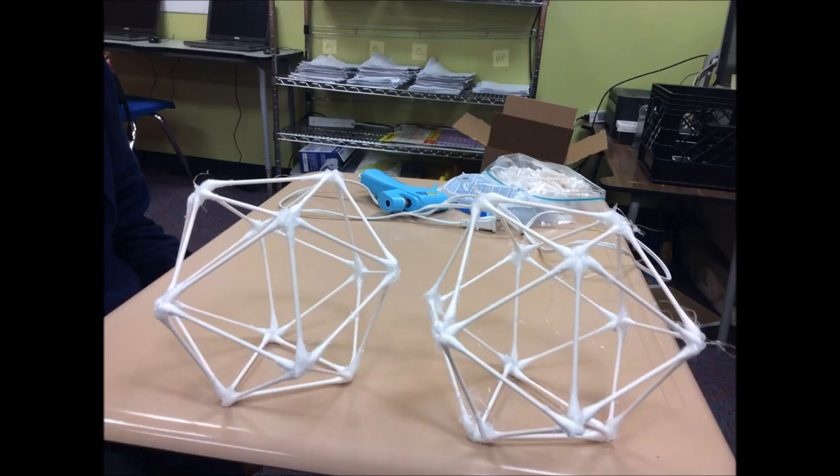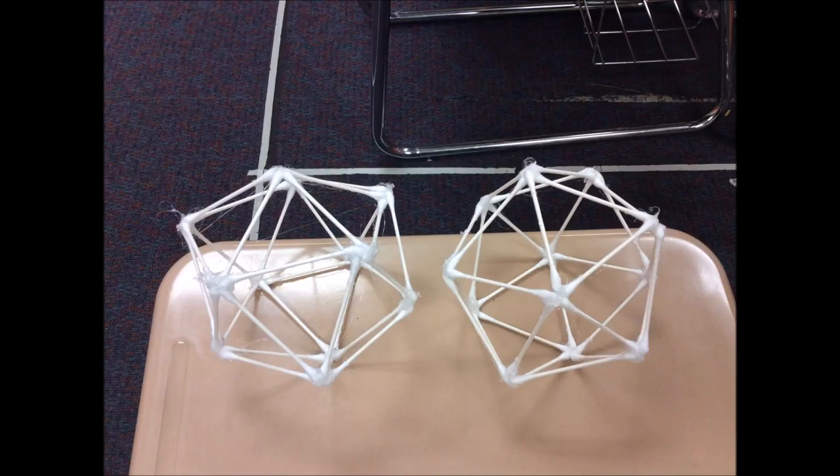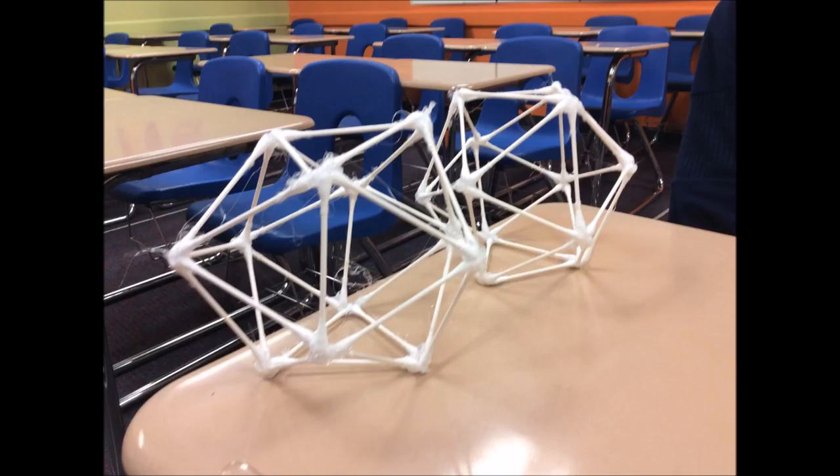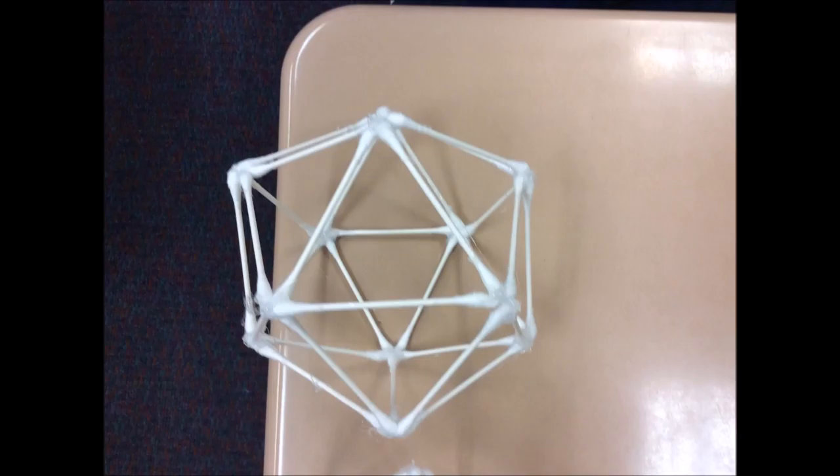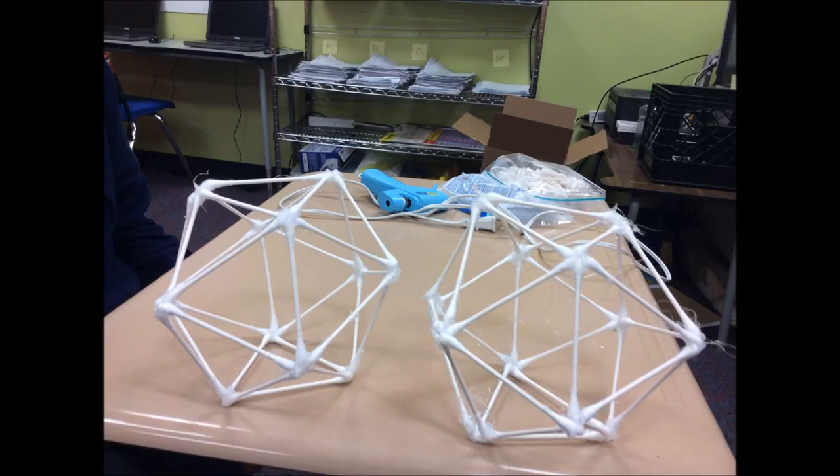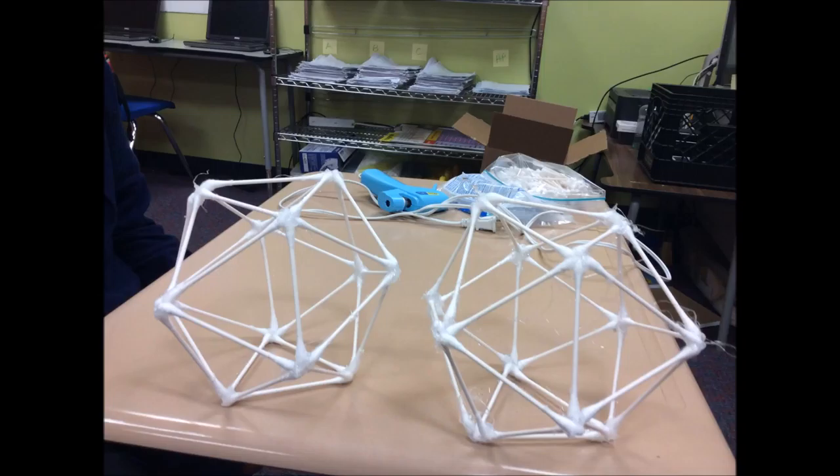More recently, Atiyah and Sutcliffe have claimed that a regular icosahedron appears among a collection of stone balls in the Ashmolean Museum, balls that were unearthed in Scotland and may date back to 2000 BC.